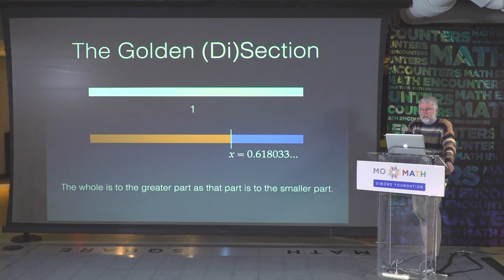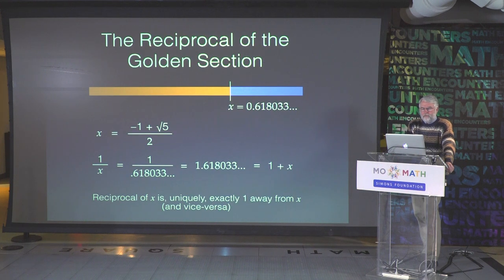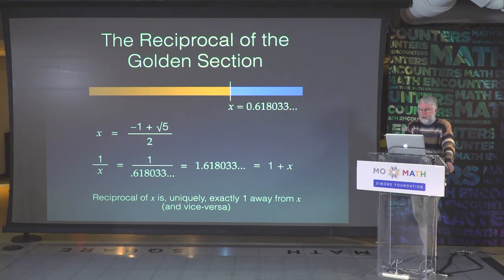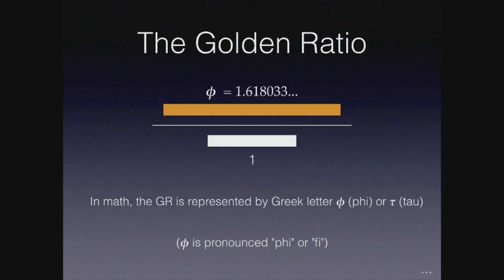Everything we're talking about is essentially an ideal — an approximation to this irrational number, a little bit higher than three fifths. That's called the golden section, and I like to think of it as a dissection into two pieces. The whole is to the greater part as that part is to the smaller part. The reciprocal is 1 over x. If you put 1 over 0.618033... into a calculator, the reciprocal is 1.618033... — the infinite digits are exactly the same. So the reciprocal of this number is one more than the number itself. That's a unique property. We call this reciprocal the golden ratio.